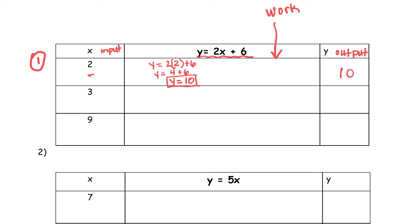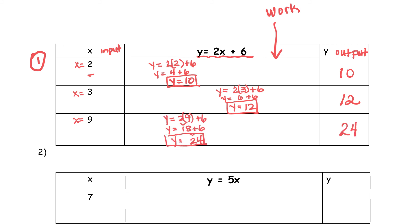Next, x is now equal to 3. y equals 2 times 3 plus 6. Pause the video and try this one on your own. When x is equal to 3, y is equal to 12. Try the last one — you should start to see a pattern; it's the same thing, just substituting different numbers for the same expression. Try the next one for x equal to 9. When x is equal to 9, y is equal to 24.